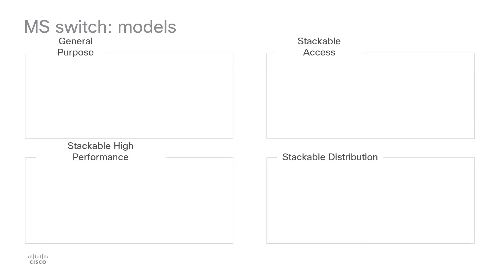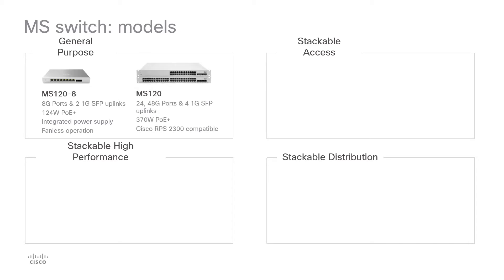Let's look at the current MS switch models. The MS-220 series is End of Sale and End of Life, and the migration path to the current generation is the MS-120 family. The MS-128 is a compact, fanless switch providing 8 gigabit Ethernet ports and two fiber SFP uplinks, capable of delivering PoE+ power with an integrated power supply. The MS-120 is also available in a 1-rack-unit form factor with a variety of port and power configurations, as well as power redundancy via a Cisco RPS 2300 unit.